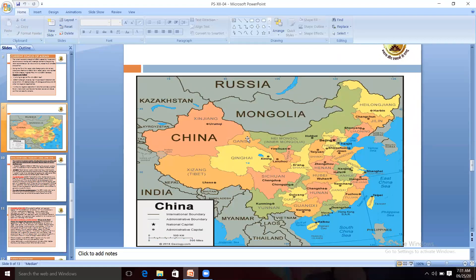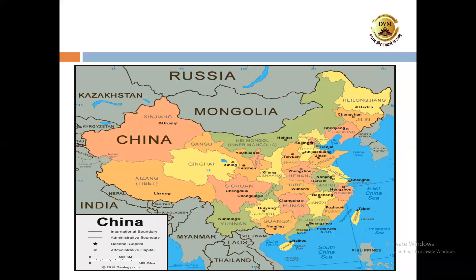Please check this map of China. You can observe the political boundaries of China with different countries like Mongolia, Russia, Kazakhstan, India, Myanmar, Vietnam, and Laos.